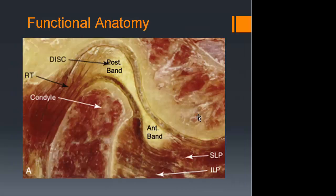Here's a cadaver specimen. You can see the intermediate zone is definitely thinner, with a more pronounced anterior band and posterior band. In a normal closed-mouth position, the 12 o'clock position of the mandibular condyle is right over the posterior band. You need to know this because if a patient has chronic TMJ pain, you'll likely want an MRI — and the MRI looks exactly like this.